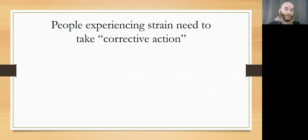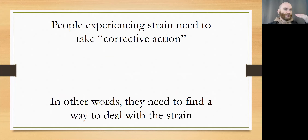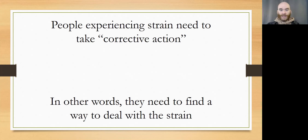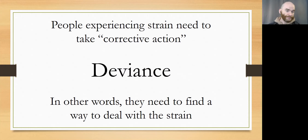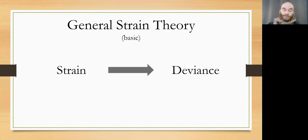According to Agnew, people experiencing strain need to take corrective action — to respond to the strain in a way that helps them deal with it, removes the source of strain, or allows them to deal with the emotional consequences of strain. That's where deviance can come into play. So the basic model is that strain leads to deviance.